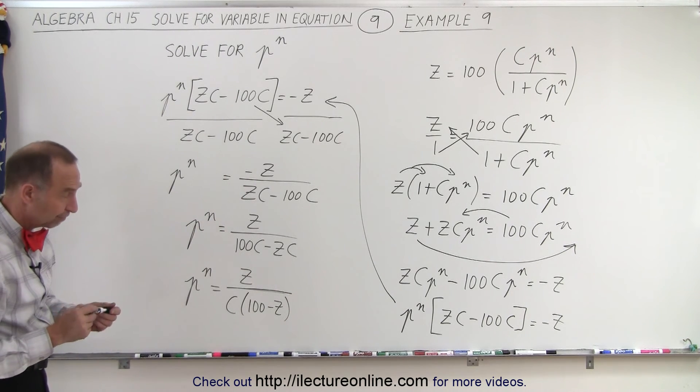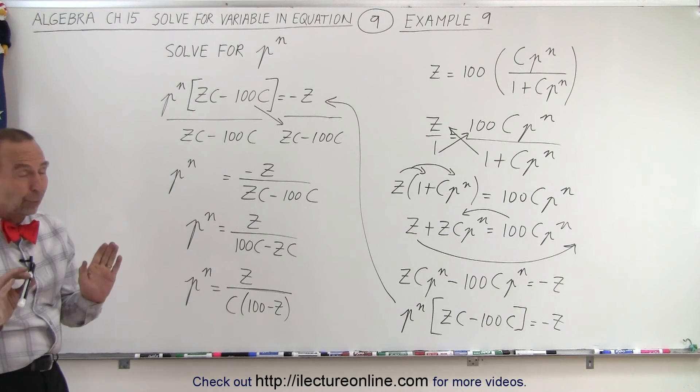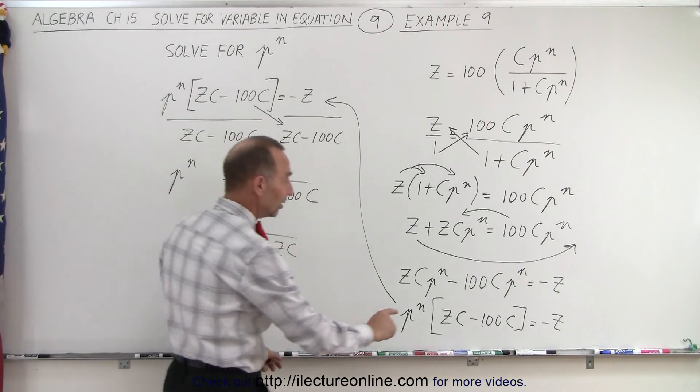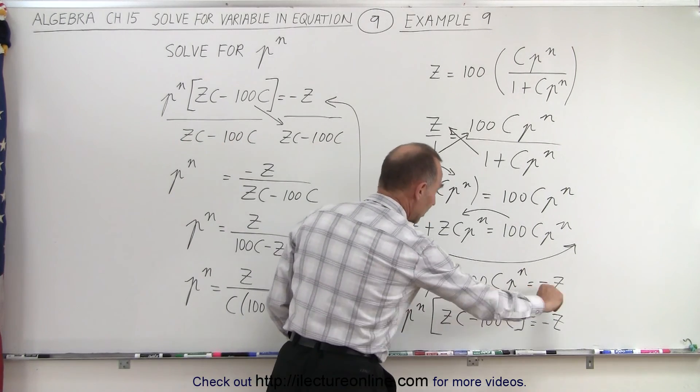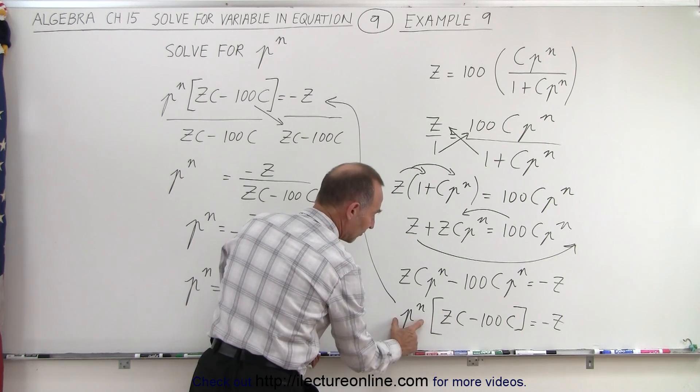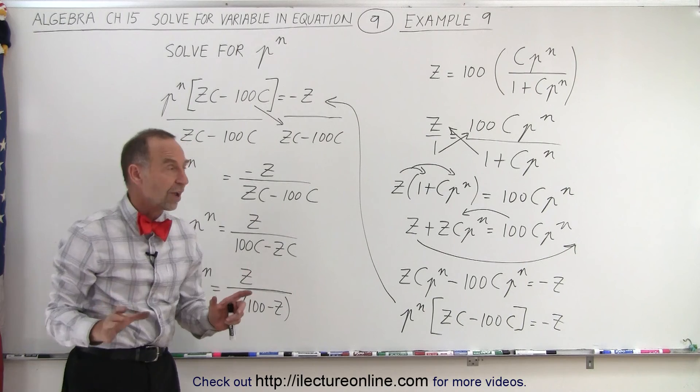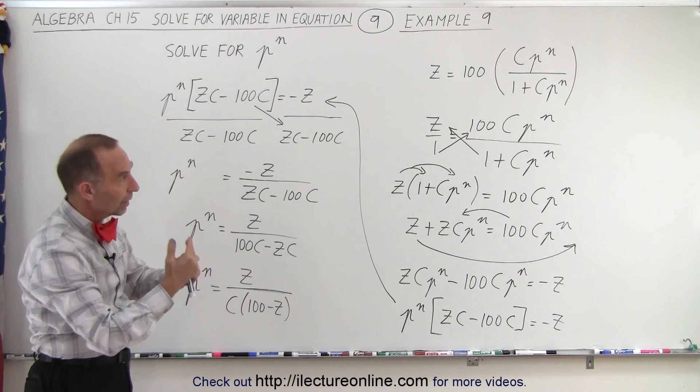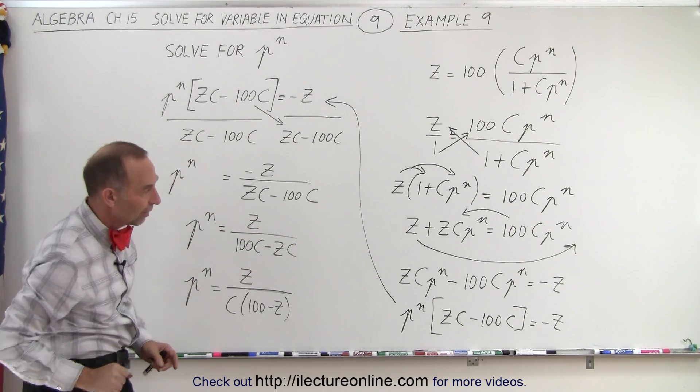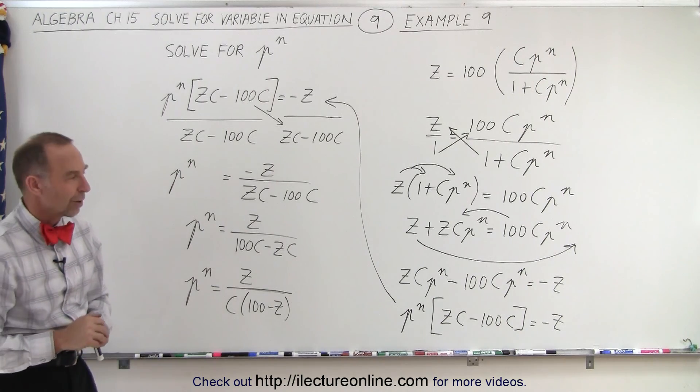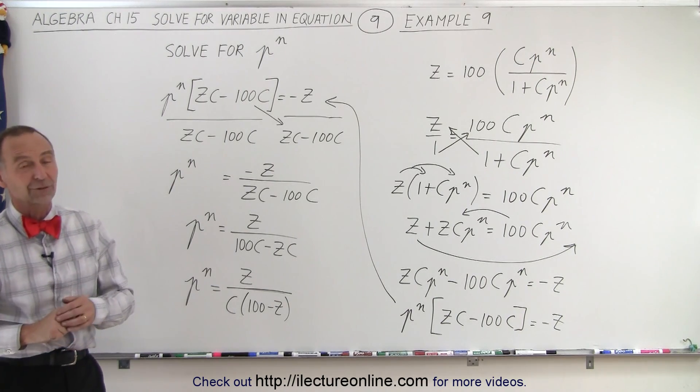But that's how we solve that variable. Notice, the way to do that is to eventually get it into this format right here, so we can factor out a common factor p to the n, which is what we're looking for. And that was the strategy, to cross multiply in such a way that we could isolate p to the n on one side of the equation. And that is how it's done.